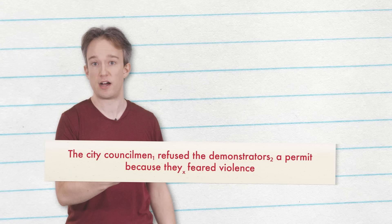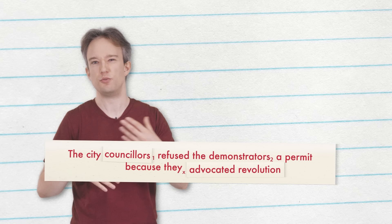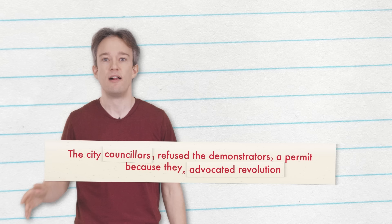It was the 70s, there weren't many councilwomen, and there was a lot of revolution. Winograd argued that solving that sentence requires knowing not only who can issue permits or what a demonstrator is, but also the political interests of a council and the ways in which they'd view political change. That referent changes based purely on the context and the meaning of those last two words.